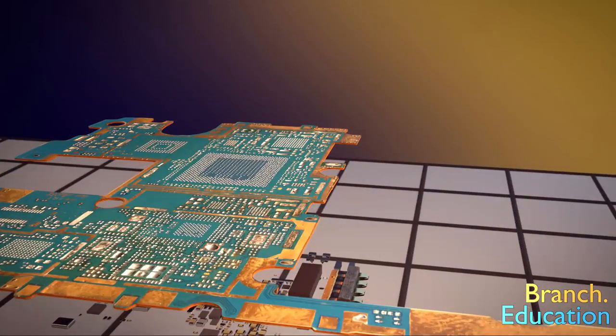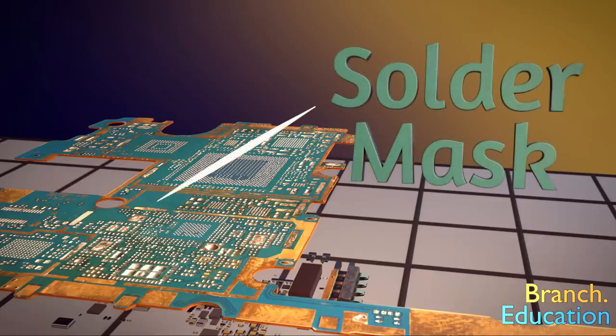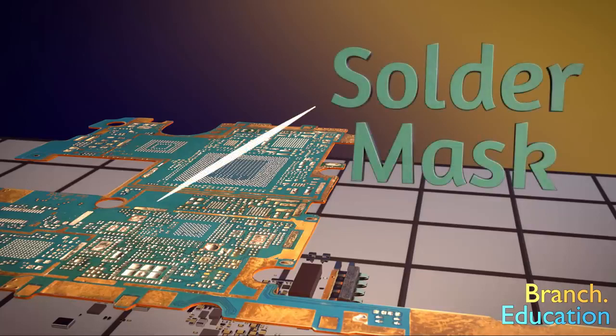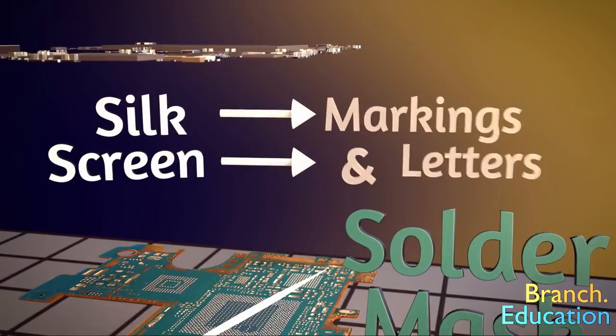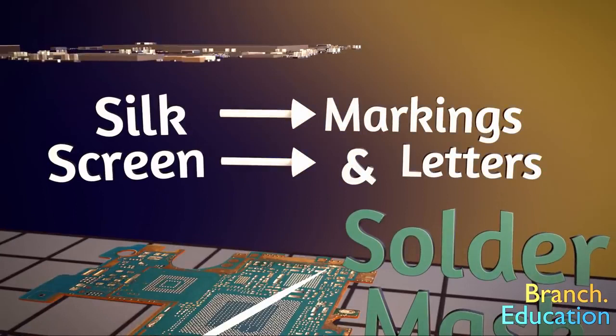Additionally, on the top and bottom is a coat of colored solder mask, which provides electrical insulation while keeping the mounting pads for the components accessible. And on top of that is silkscreen, which is just ink used for markings and letters that tell where components are placed.